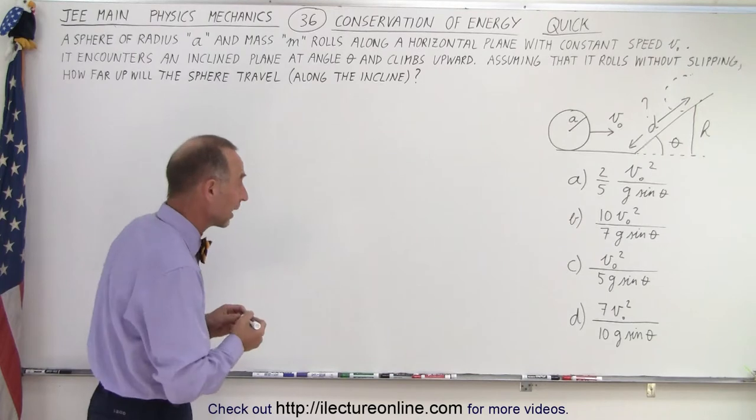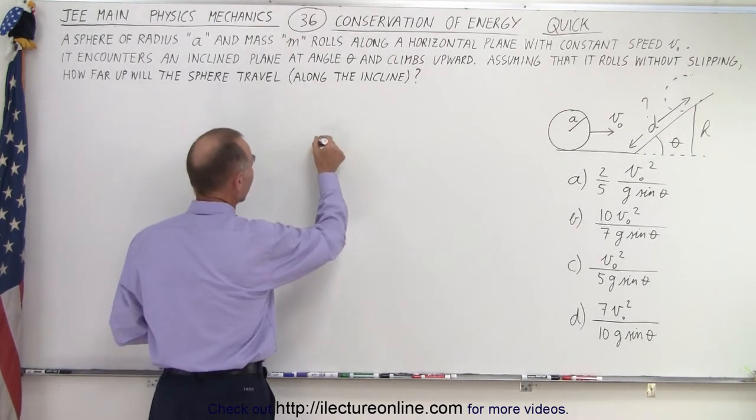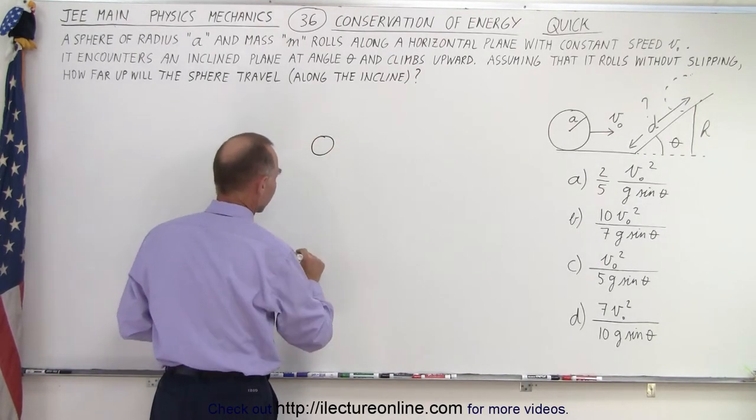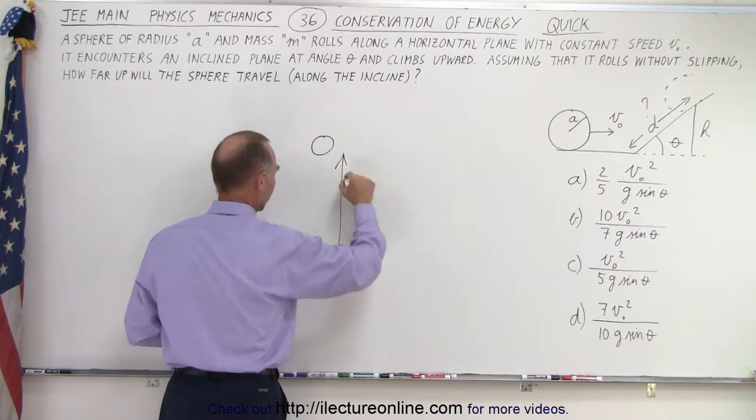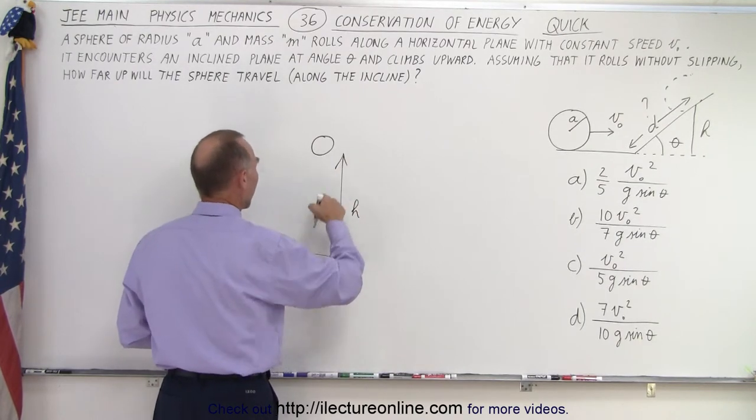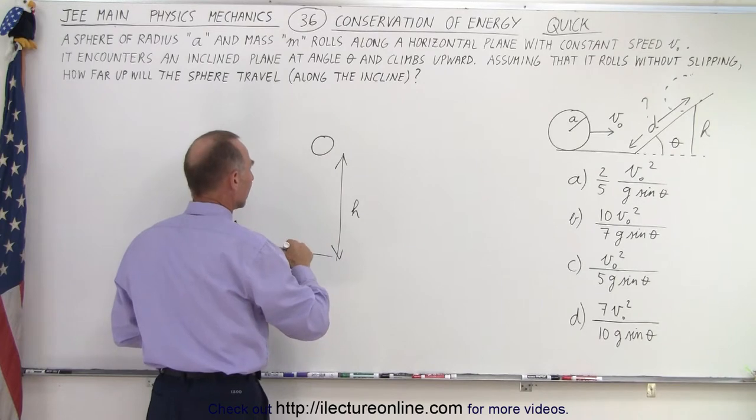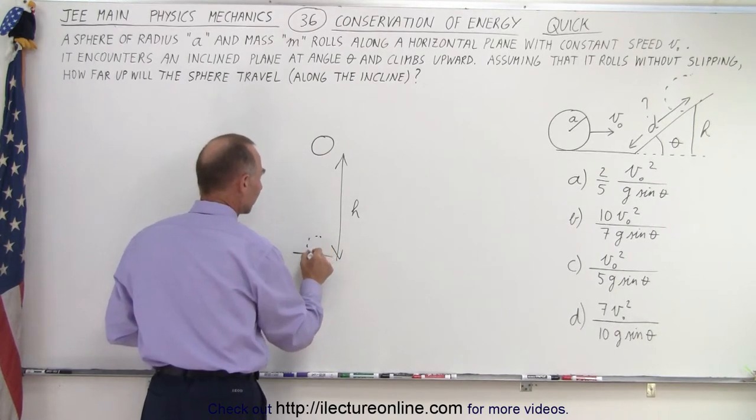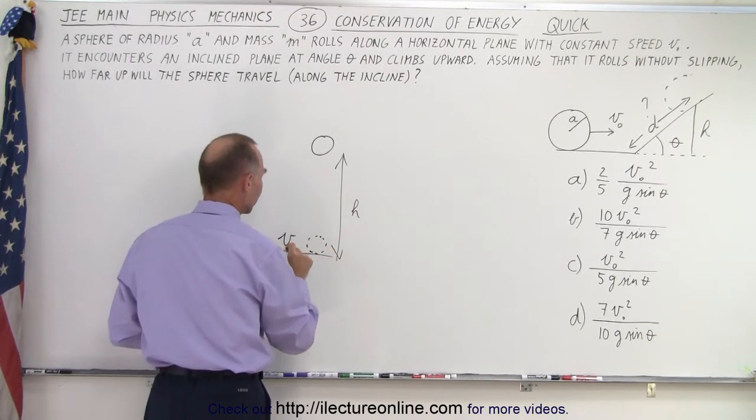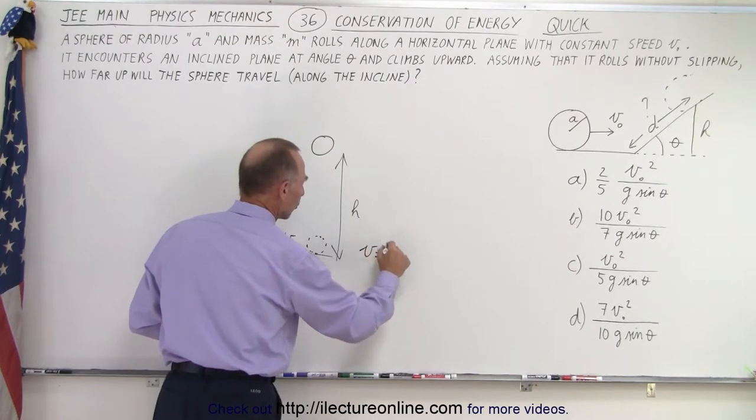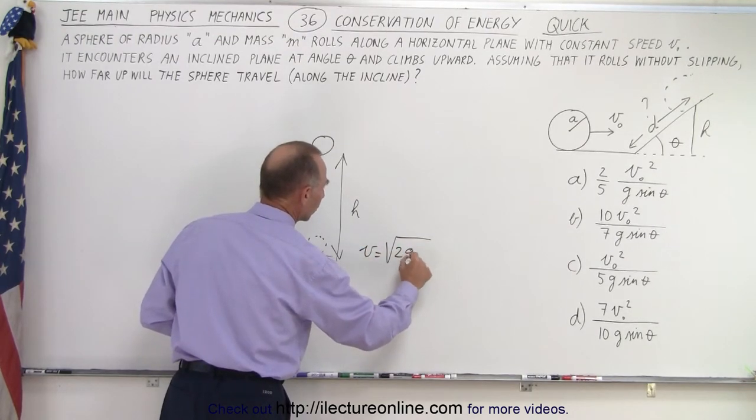But you have to know this following thing. When you have an object that starts at a certain height h, and we allow the object to fall down, then we can say that the velocity that we'll have at the bottom is going to be equal to the square root of 2gh.